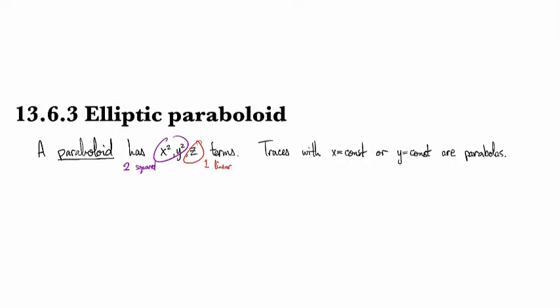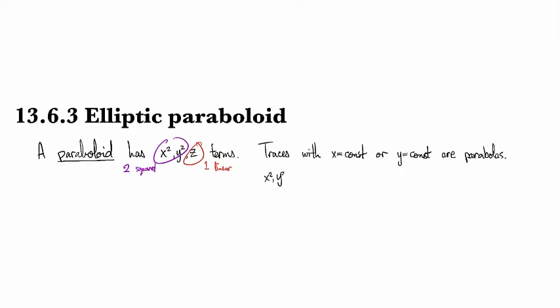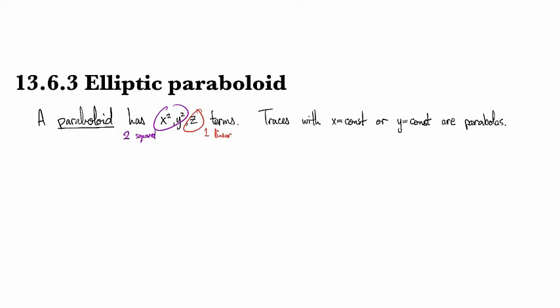So now it's called a paraboloid because the traces that you get by holding x constant or holding y constant will be parabolas. And we'll see that interesting things happen depending on the sign of the two squared terms.